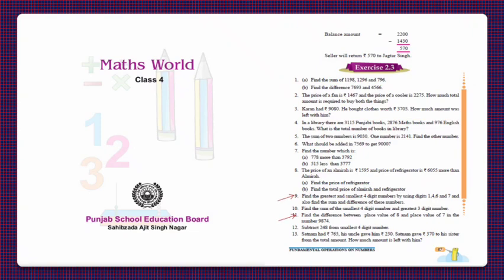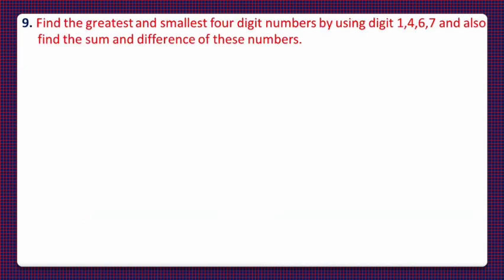Students, today let us do Exercise 2.3 of Class 4 Maths World. Today we will do question number 9 and 11. Question number 9 is: find the greatest and smallest four-digit numbers by using the digits 1, 4, 6, and 7, and also find the sum and difference of these numbers.